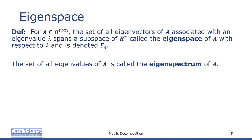Geometrically, the eigenvector corresponding to a non-zero eigenvalue points in the direction that is stretched by the linear mapping. The eigenvalue is the factor by which it's stretched. If the eigenvalue is negative, then that vector is stretched in the negative direction.